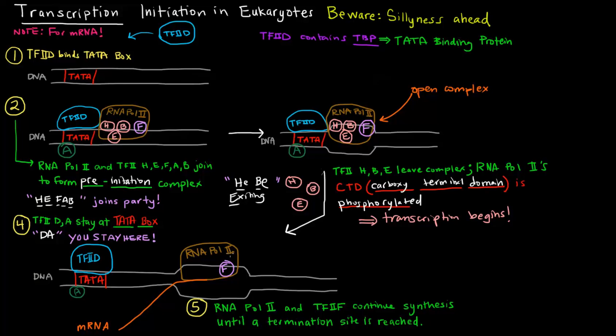Then RNA polymerase II, along with the only transcription factor left here other than these two and the ones that left, is F. RNA polymerase II and transcription factor IIF continue synthesis until a termination site is reached. So they're synthesizing the mRNA and they're going to keep going until a termination site is reached, at which point the RNA polymerase II will fall off. And that's pretty much it as far as initiation of transcription of mRNA in eukaryotes.